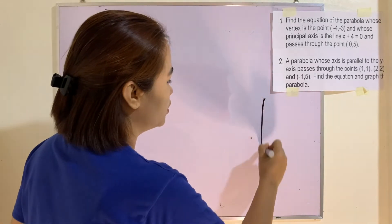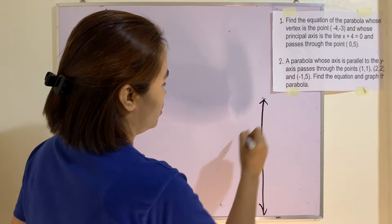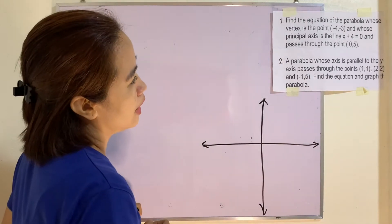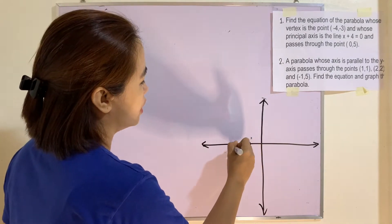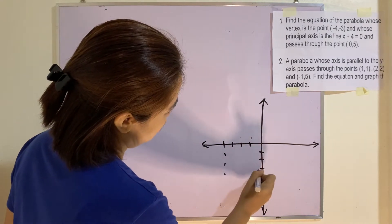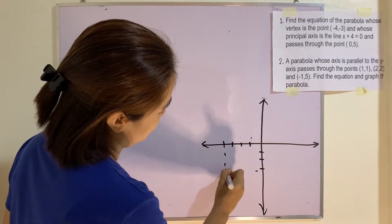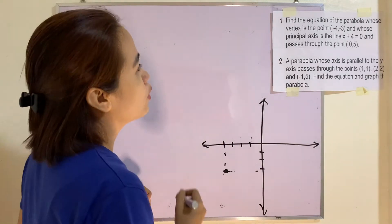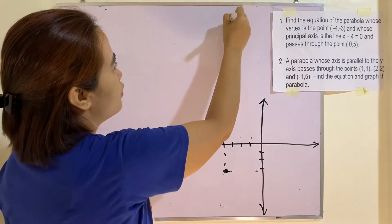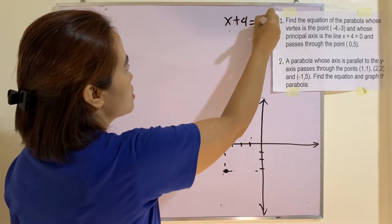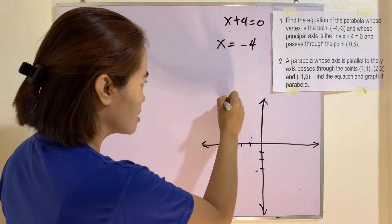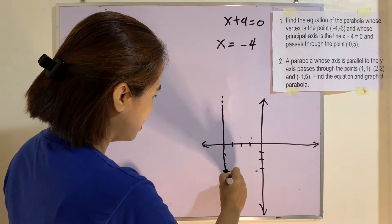The first step is to sketch or illustrate the problem. We have vertex at (-4, -3). It says here that our principal axis is the line x + 4 = 0, which means x = -4 if you solve for x. So this line is your principal axis.